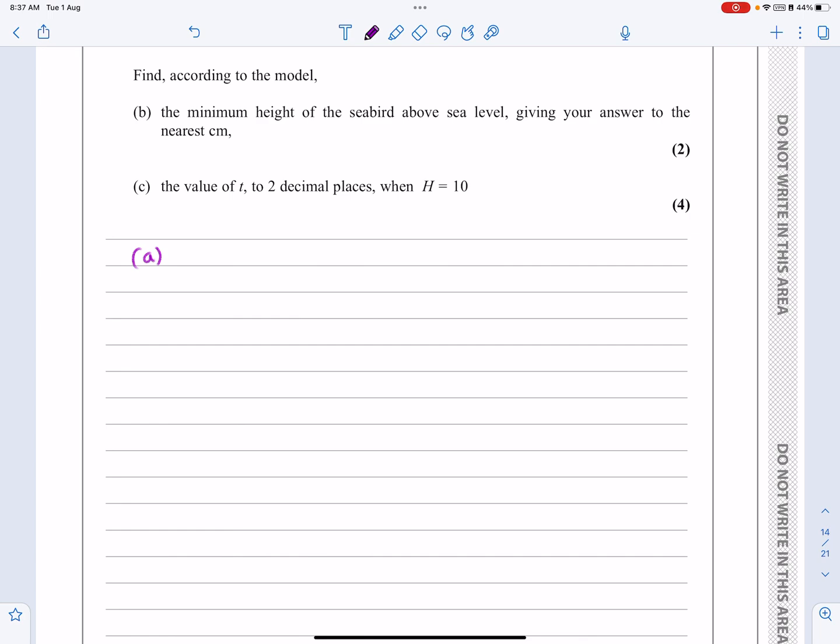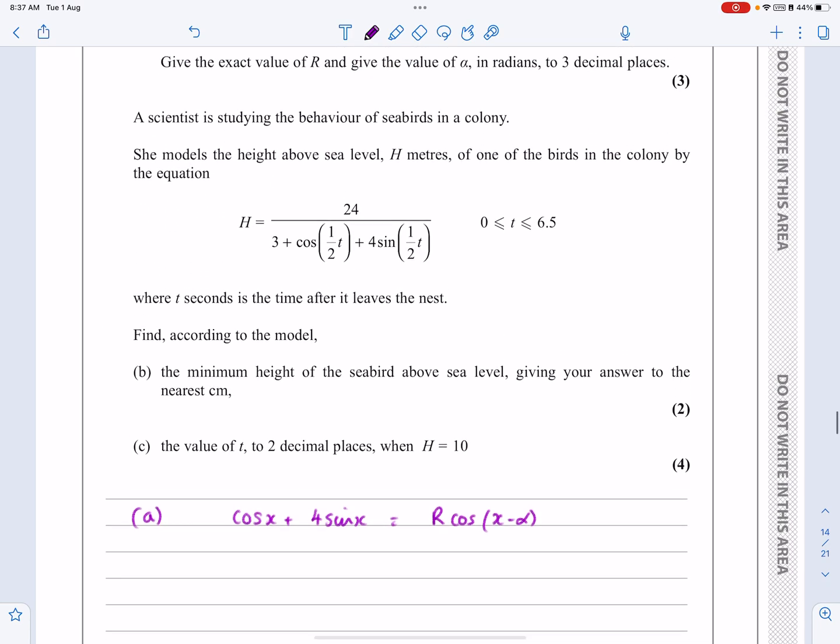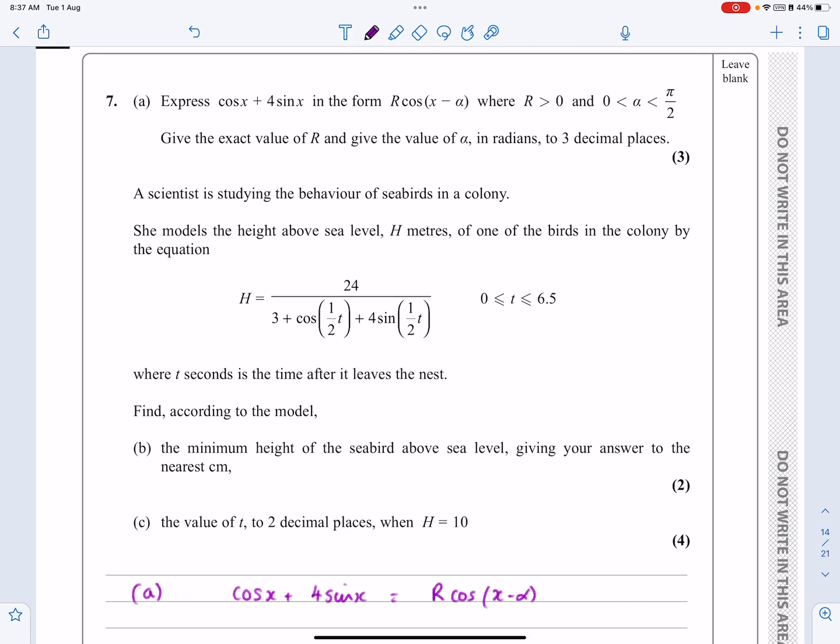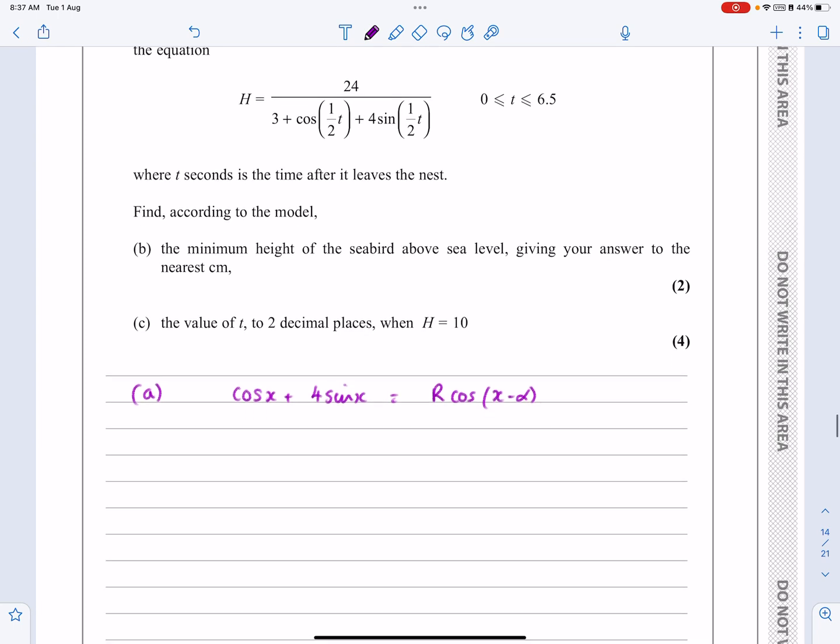So it's asking us to simplify cos x plus 4 sin x, in this case, equal to R cos x minus alpha. Let's just go back and have another quick look. Right, exact value for R and alpha, three decimal places, and working in radians. Okay, so we can do that.